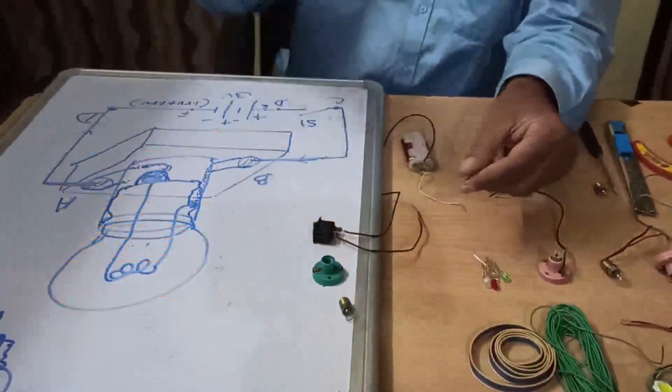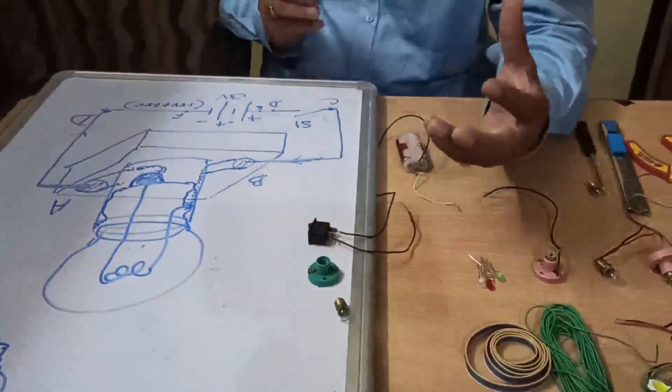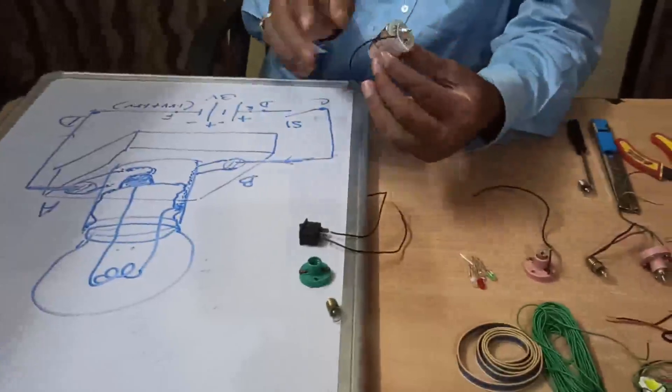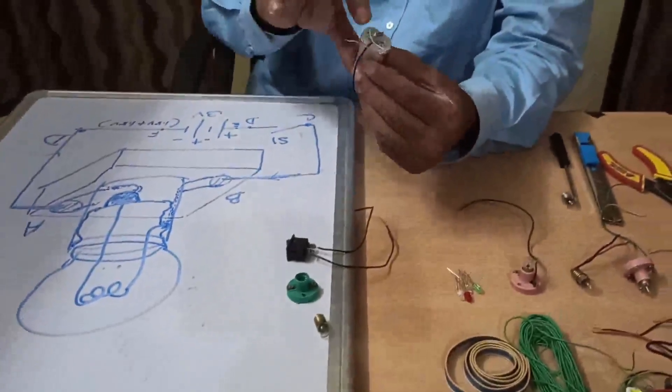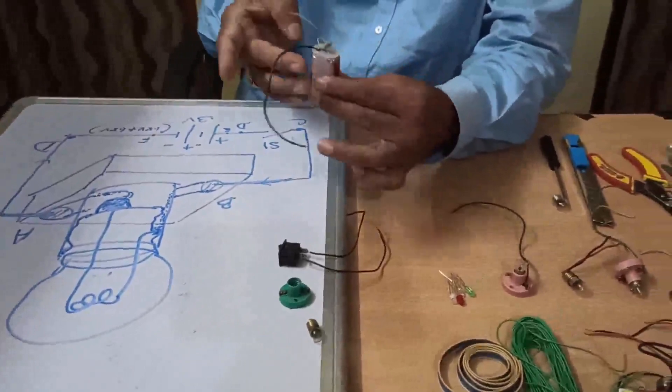Next in my video I will explain how soldering can be done. Then I have taken two pencil cells with a holder, this was a holder with two terminals.